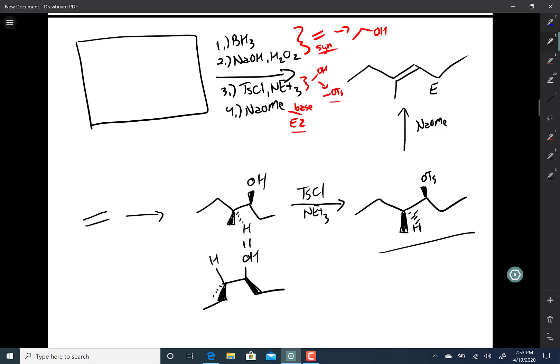Like so. We can double check this by checking R and S. One, two, three - that's an S chiral center. One, two, three - that's also an S chiral center. So it checks out.